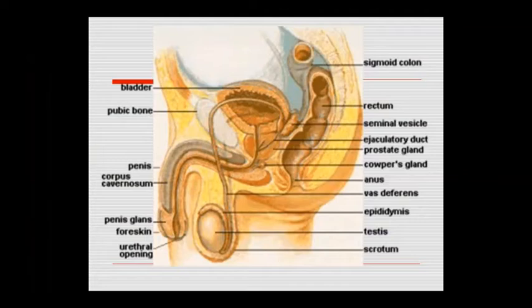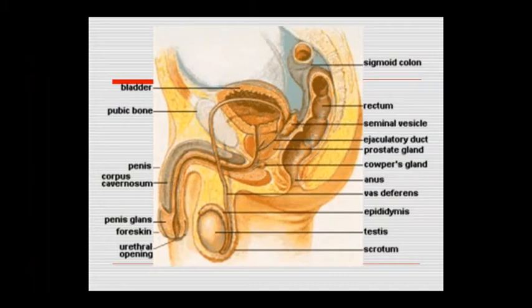Anatomy diagram में: sigmoid colon, rectum, bladder, pubic bone दिखाए गए हैं। साथ में seminal vesicle, ejaculatory duct, prostate gland, और छोटी सी cowper's gland है। Testis जो scrotum के अंदर descended है वह epididymis में खुलती है, epididymis आगे vas deferens में जाता है। Penis के parts में corpus cavernosum और glans penis हैं जो foreskin से covered रहती है। Urethral opening भी दिखाई गई है।